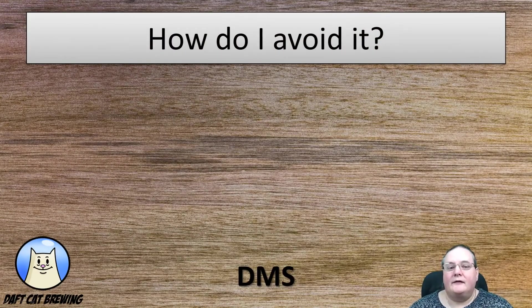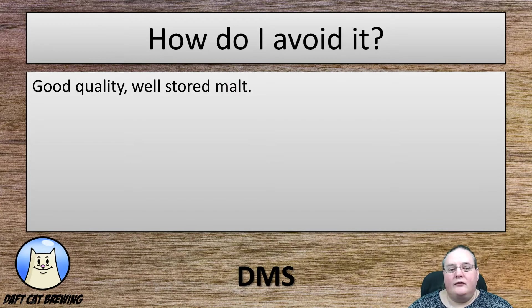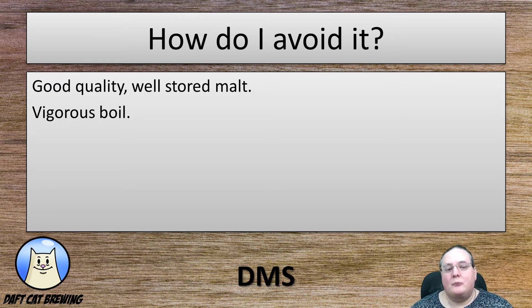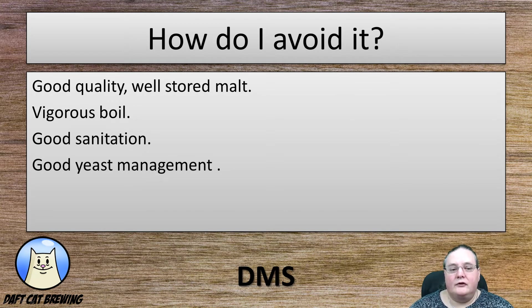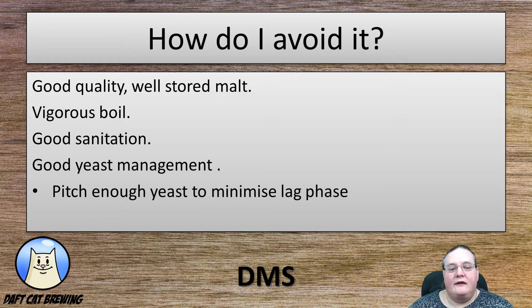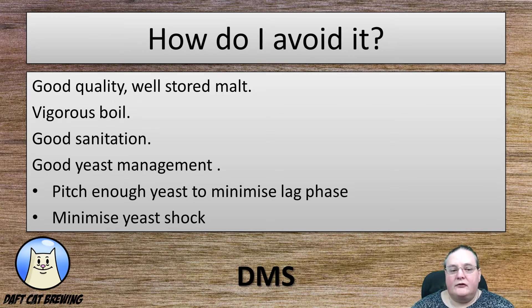How do you avoid or minimise it? Use good quality, well-stored malt. If it starts to get damp and the moisture level goes up, you'll get more SMM, which leads to more DMS. A good vigorous boil will help it boil off — it doesn't need to be 90 minutes, but make sure it's vigorous. Use good sanitation practices and good yeast management. If you don't pitch enough yeast, the lag phase will be extended and bacteria or wild yeast can get a hold. Also minimise yeast shock — you don't want to be putting cold yeast into very hot wort.